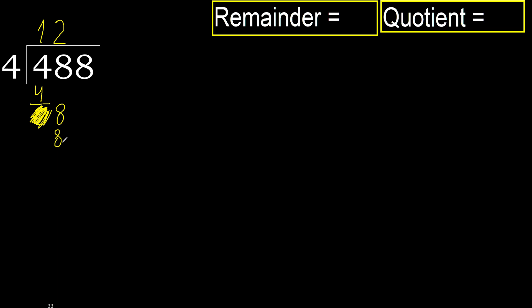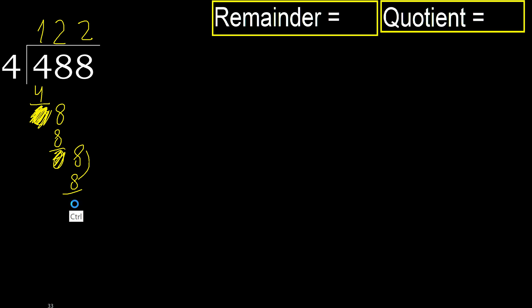Is not greater. Subtract. Next. 8. Four multiply by 2 is 8. Subtract. Next.